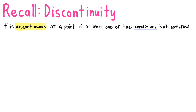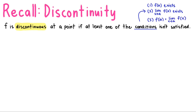These conditions of continuity include: first, f of a exists; second, the limit of f of x as x approaches a exists; and lastly, these two are equal.